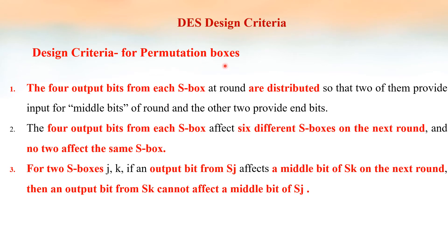The design criteria for the permutation boxes: the output of the S box is given to the permutation boxes. There are three criteria for their design. The four output bits from each S box at a round are distributed so that two of them provide input for middle bits of the next round and the other two provide for end bits.